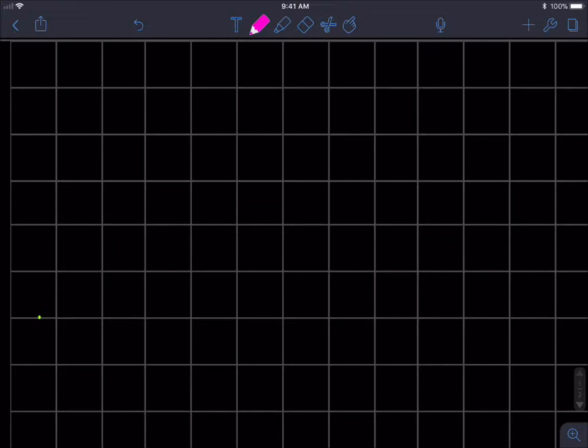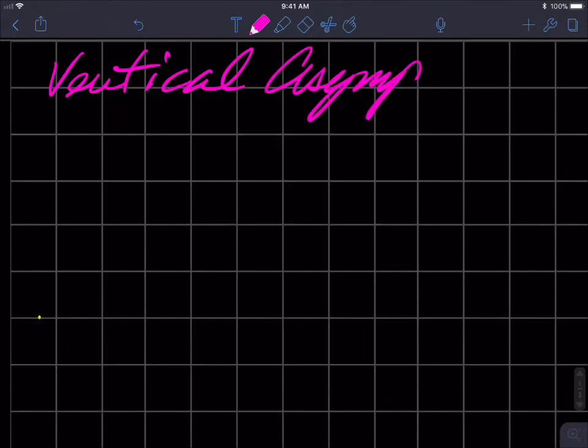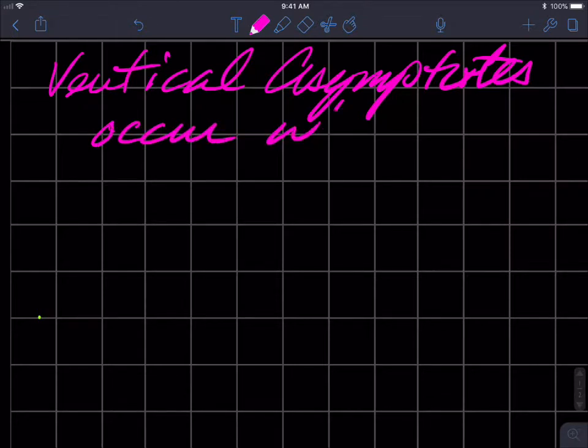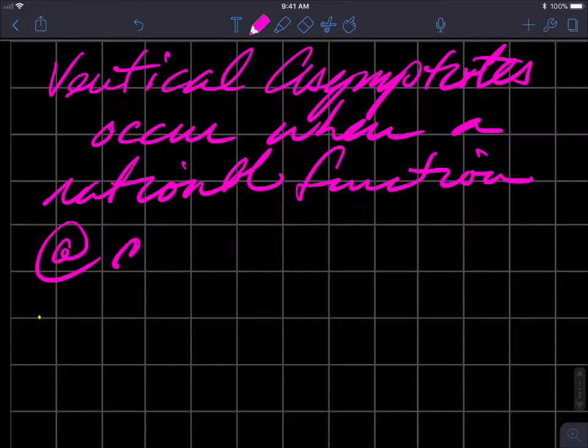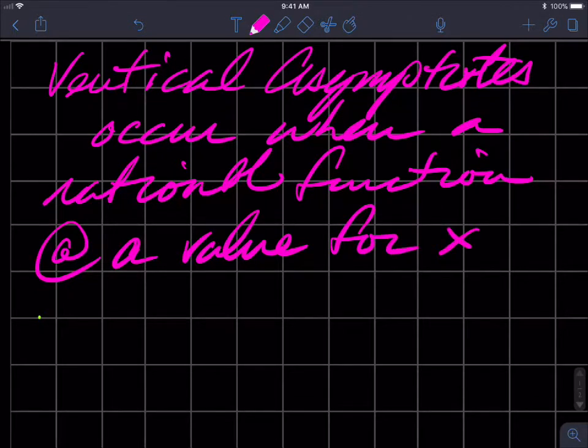So vertical asymptotes occur when a rational function at a value for x is undefined.